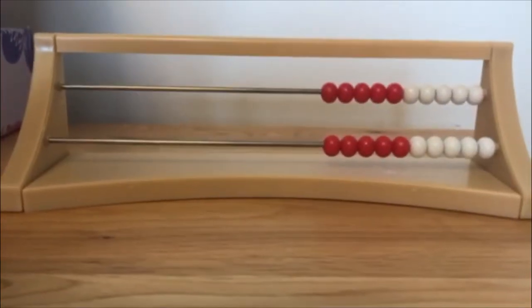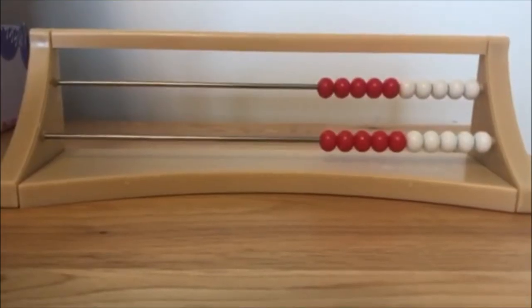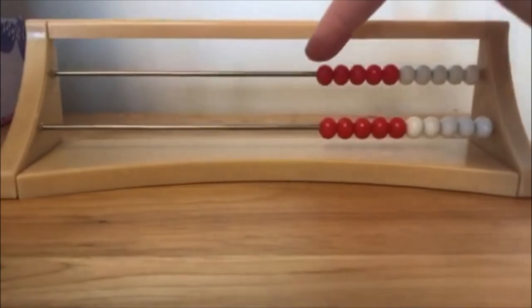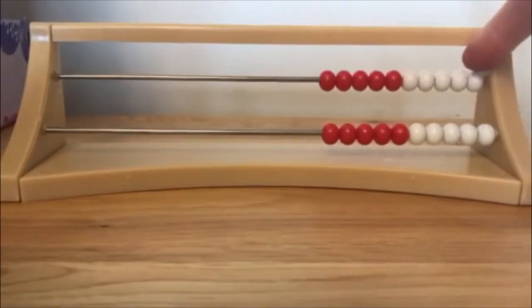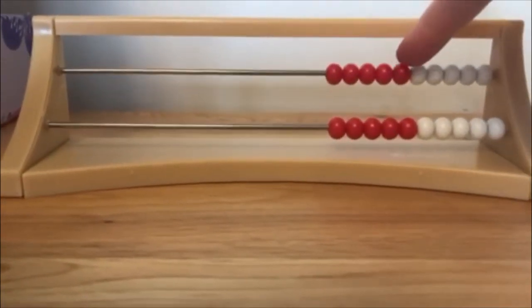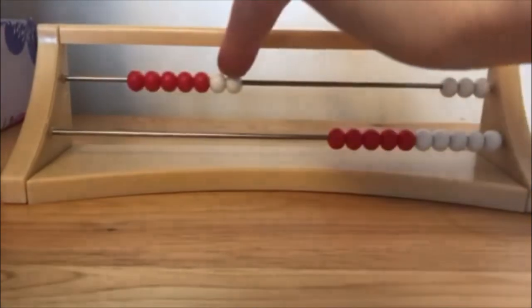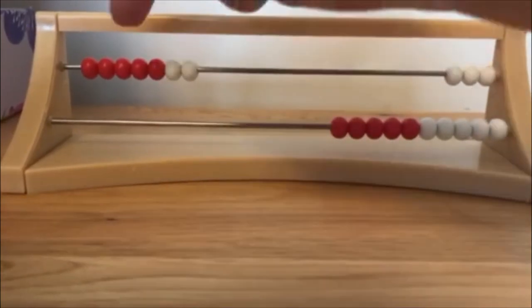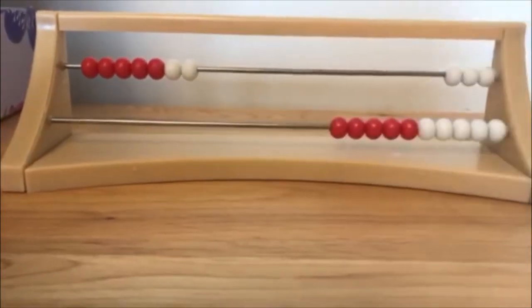Another way children may be familiar with seeing 10 is on a bead string or a bead frame like this one, where the 10 is shown as 5 and 5. This helps us see when we're making numbers such as perhaps 7, that 7 is 3 less than 10, but is also 5 add 2.